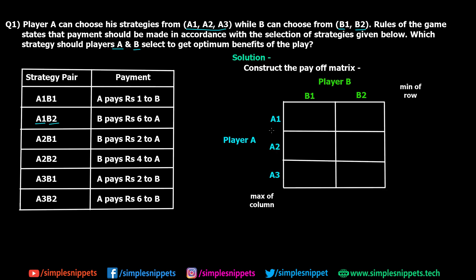In the payoff matrix, player A has three strategies A1, A2, A3, and player B has two. When A1 and B1 are selected, A pays 1 rupee to B, so we record −1 (negative because A is losing). When A1 and B2 are selected, B pays 6 rupees to A, so we record +6. For A2/B1, B pays 2 to A: +2. For A2/B2, B pays 4 to A: +4. For A3/B1, A pays 2 to B: −2. For A3/B2, A pays 6 to B: −6.